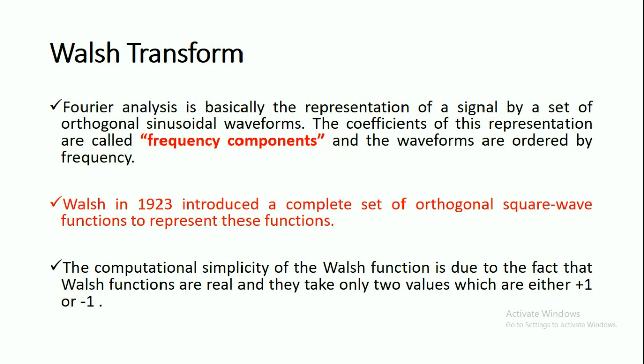Fourier analysis is basically the representation of a signal by a set of orthogonal sinusoidal waveforms. The coefficients of this representation are called frequency components and the waveforms are ordered by frequency. Walsh in 1923 introduced a complete set of orthogonal square wave functions to represent these functions, replacing sinusoidal waveforms with square wave functions.